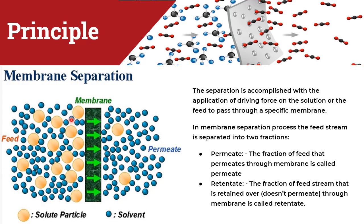After the feed is introduced into the stream, it passes through the membrane and, according to the particle size and pore size of the membrane, the solvent and solute particles are permeated. In the permeate, we have few solute particles and most of them are solvent particles. The permeate is the fraction of feed that permeates through the membrane, while retentate is the fraction of the feed stream that does not permeate through the membrane.